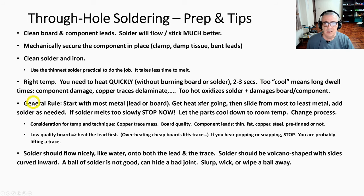As a general rule, start where the most metal is. If you have really thick traces on the board or heavy duty component leads, that's where you start. Get the heat transfer going. Touch the soldering iron to that point, add a little bit of solder to form a wet connection between the iron and component, get the heat transfer going, then slide from the most metal down to the least metal and add solder as needed. I've got an illustration of this. If the solder melts too slowly, stop right now. If five or ten seconds go by, if you haven't damaged the component or lifted a trace, count yourself lucky. Let it cool down, change your process—hotter iron, clean the components—something's wrong.